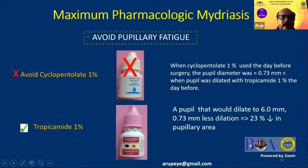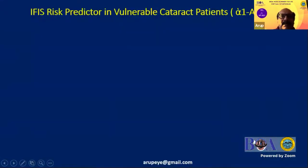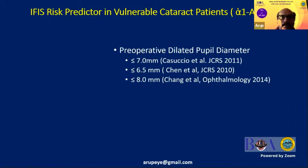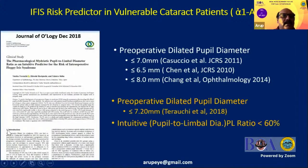If you need to dilate the pupil for workup — whether fundus workup or otherwise — use tropicamide 1%. As mentioned earlier, we like to pick up IFIS candidates. There has been discussion in the literature that maximum mydriasis less than 6.5, 7, or 8 millimeters should prompt caution, because those patients may have intraoperative miosis. However, these measurements are cumbersome — you have to take an anterior segment picture and may need to use a caliper pre-operatively.